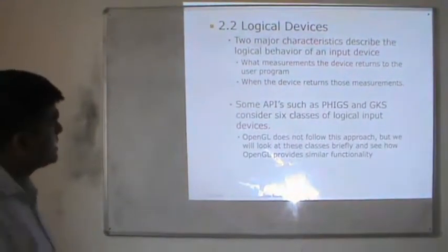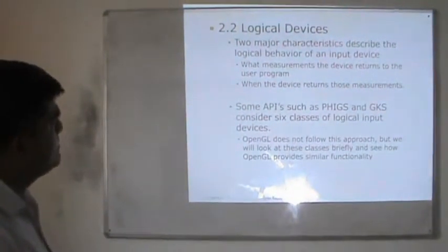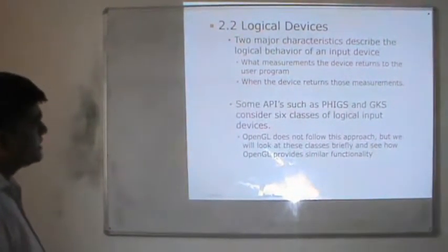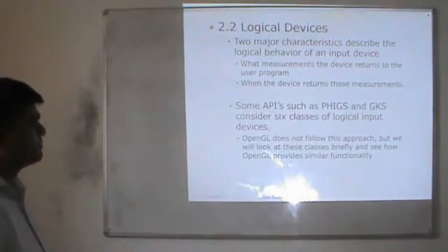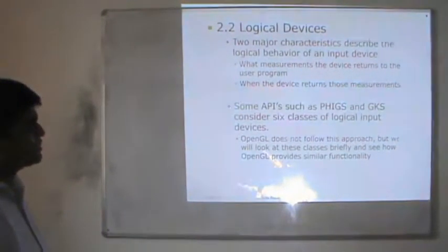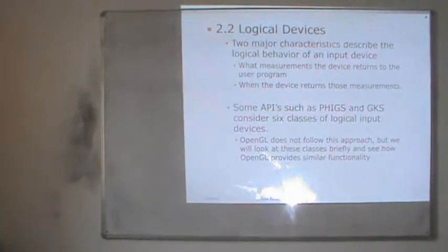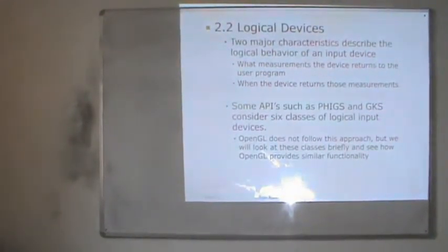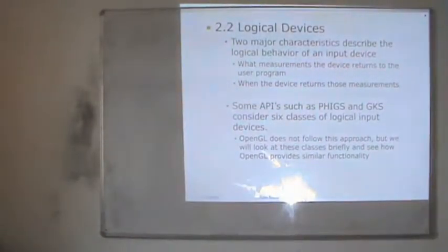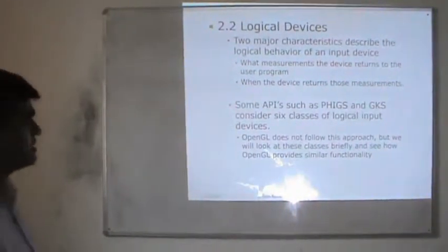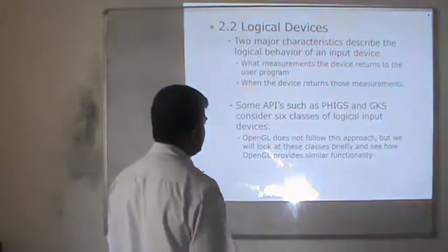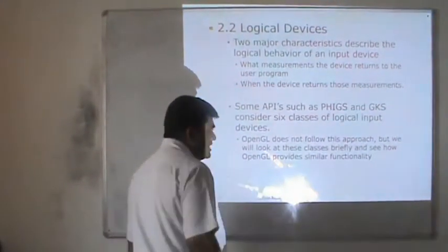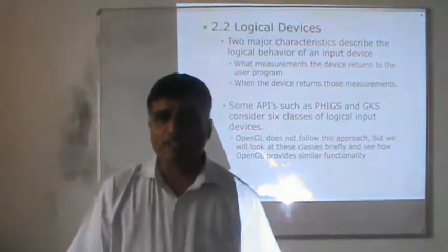Two major characteristics describe the logical behavior of an input device: what measurements the device returns to a user program, and when the device returns those measurements. Some APIs such as PHIGS and GKS consider six classes of logical input devices. OpenGL, which is an open graphical language, does not follow this type of approach, but we will look at these classes briefly and see how OpenGL provides similar types of functionality.